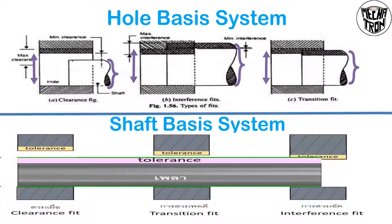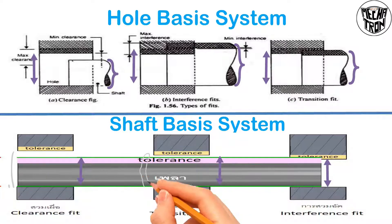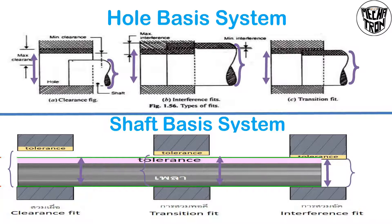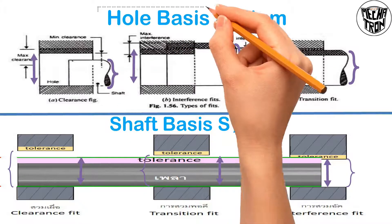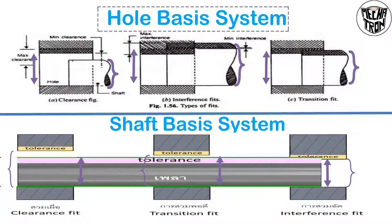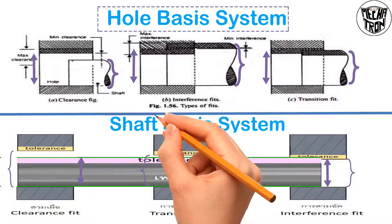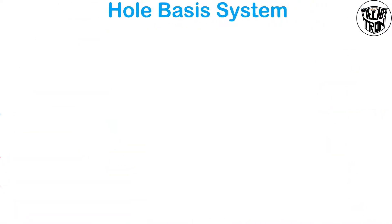In shaft-based system, the shaft diameter is set to be constant and the hole diameter will vary based on the shaft diameter. For example, you can see here that the shaft diameter is set as constant in all three figures, but the hole diameter is varied based on our requirement. So if we want to set a shaft diameter as constant, we choose the shaft basis system.